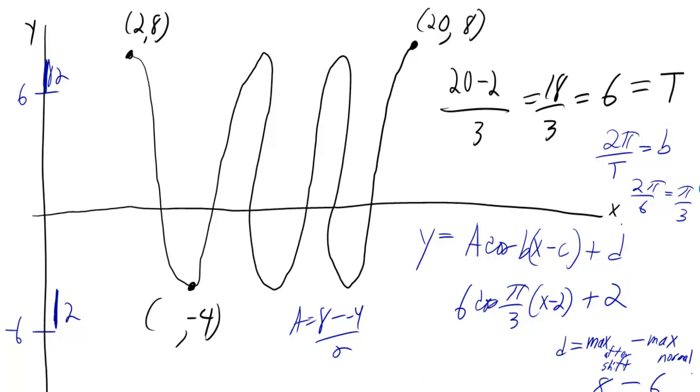Hey, what's up? I got your problem here written in black. They told you that you had two points, (2,8) and (20,8), and in between them there were three cycles. Well, that means there's going to be three minimums. You can think about it—if there was one cycle, there would be one minimum. So if there's three cycles, there's three minimums.